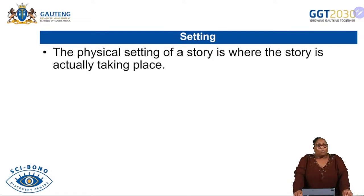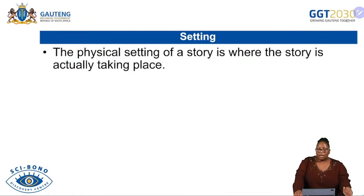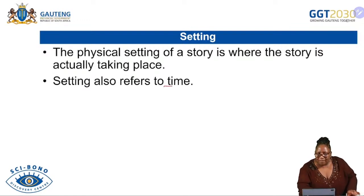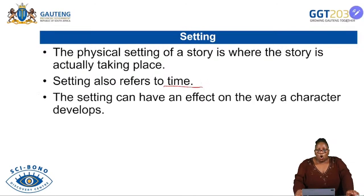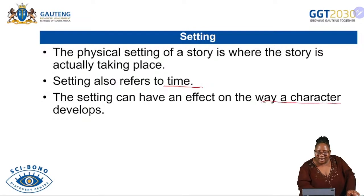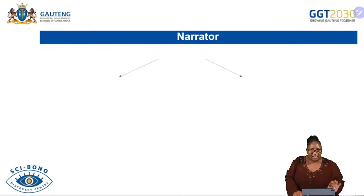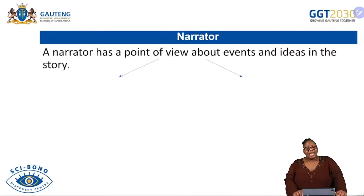Let's look at the setting. A setting is the physical location of a story — where the story is actually taking place. It refers to time and also to the way a character develops. When you check on the setting, remember you will be asked questions on where and when — where the story takes place and what was happening.